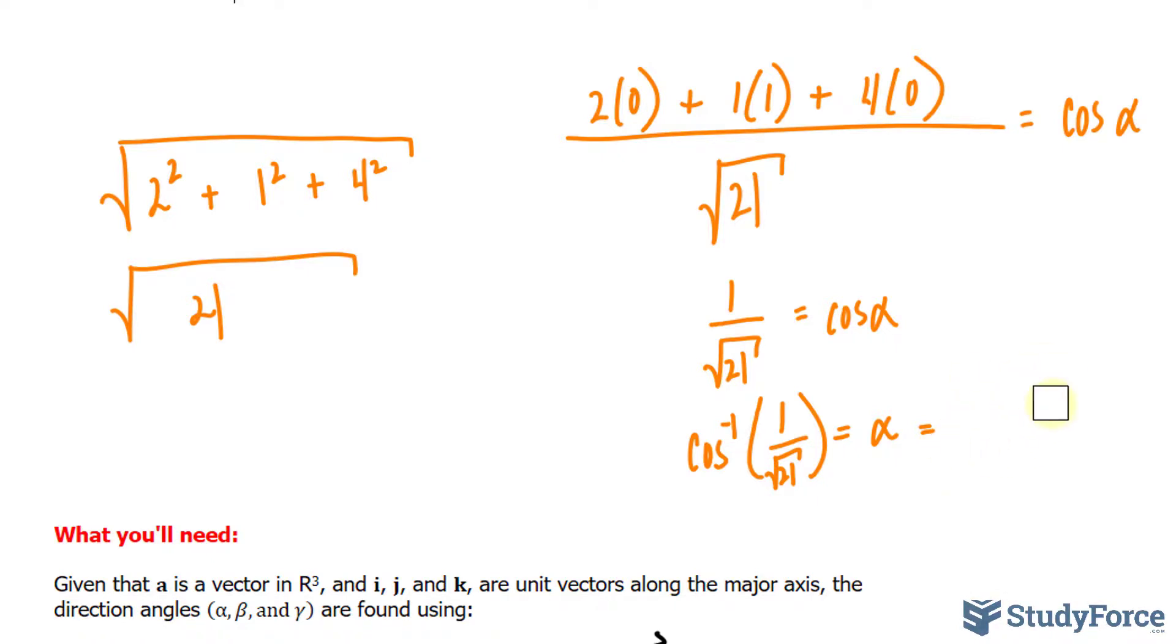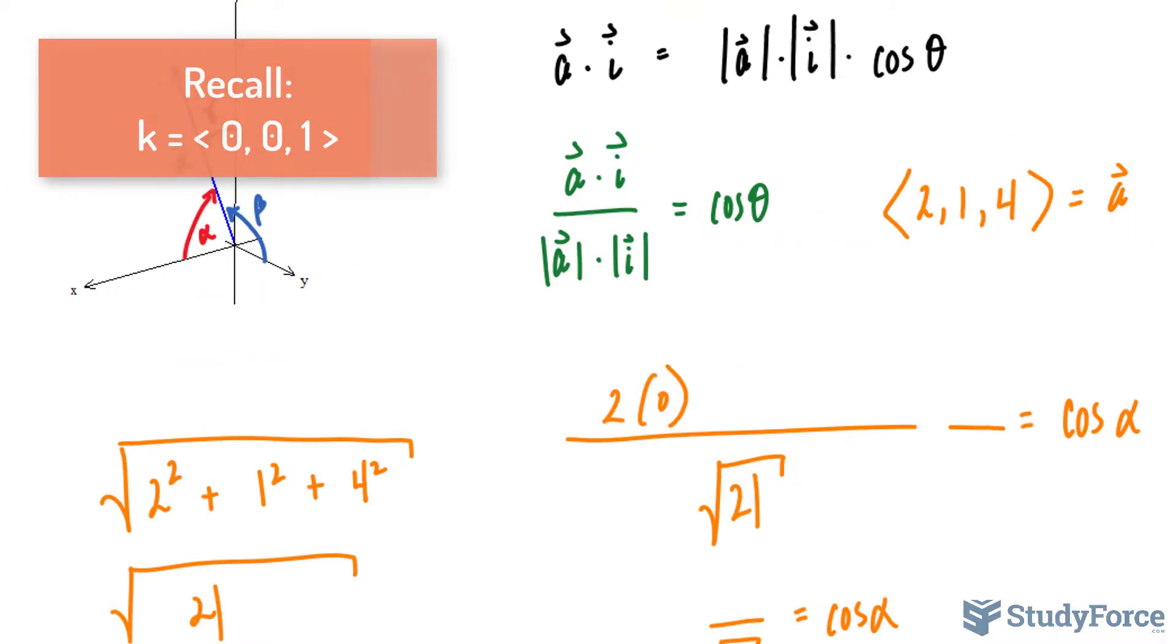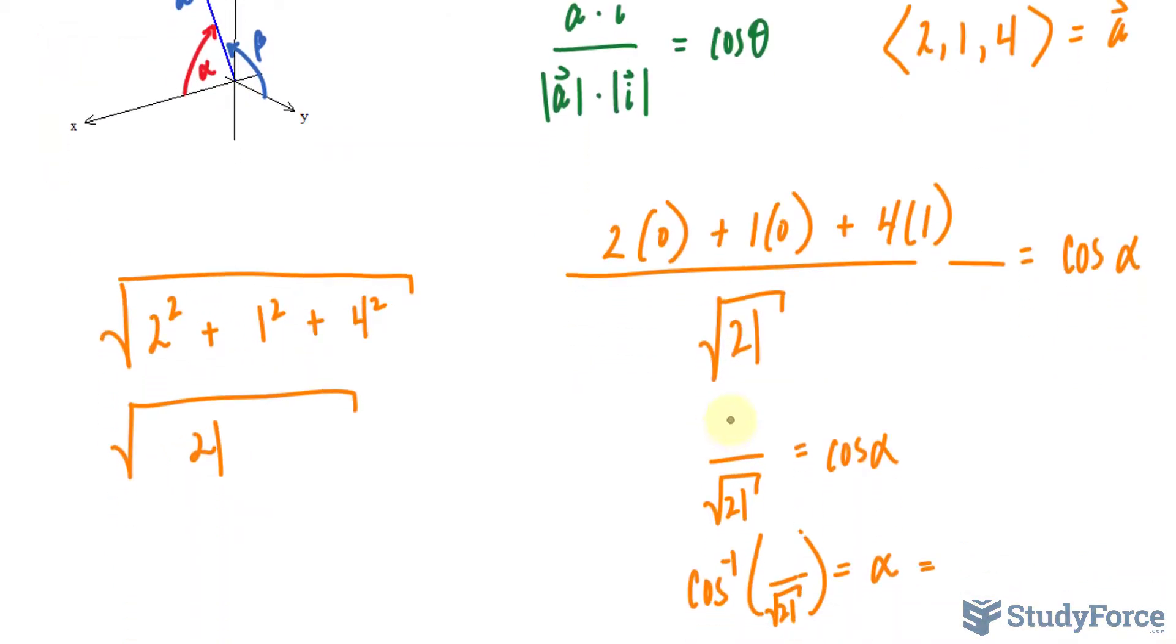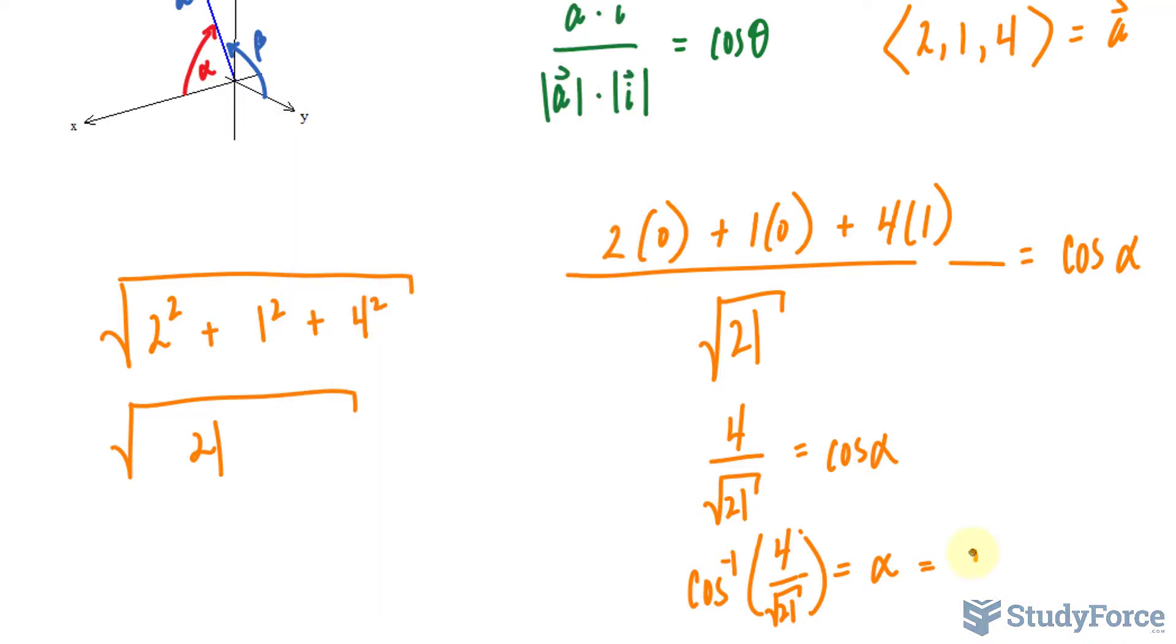And finally, for the last angle gamma: 2 times 0 (the x component along the z-axis is 0), plus 1 times 0, plus 4 times 1 (the z component along the z-axis for the unit vector is 1). This time we get 4 over the square root of 21. Using our calculator, inverse cosine of 4 divided by the square root of 21 makes 29.2 degrees.